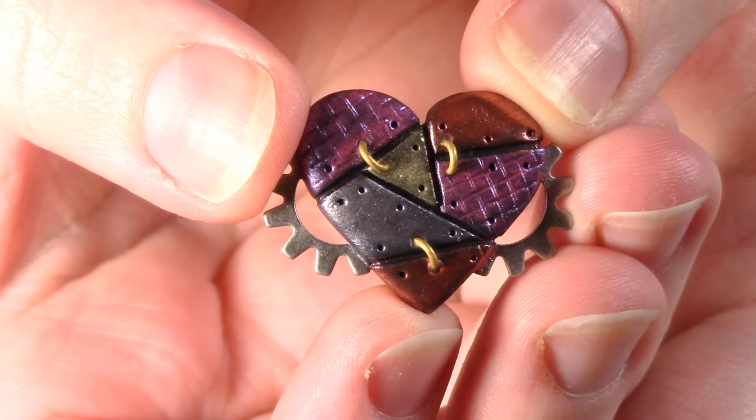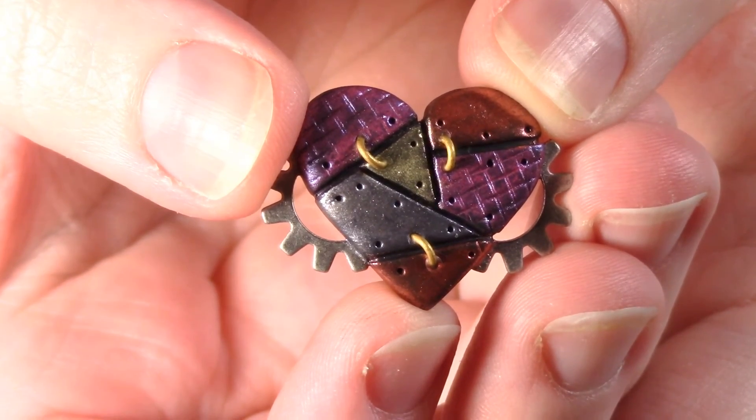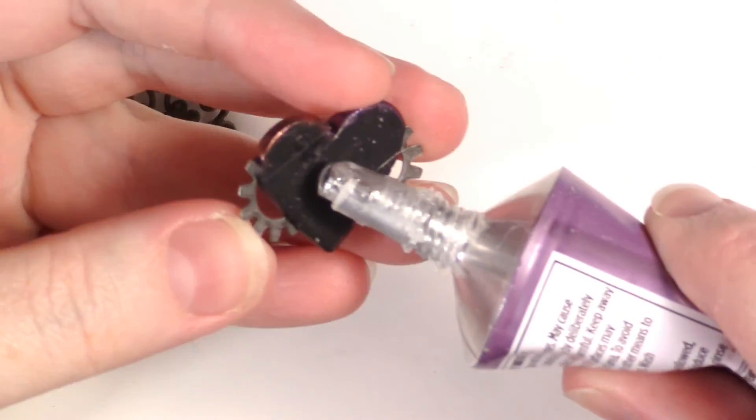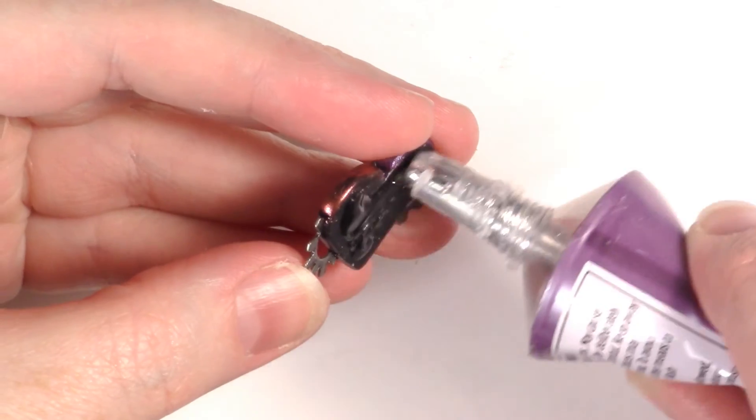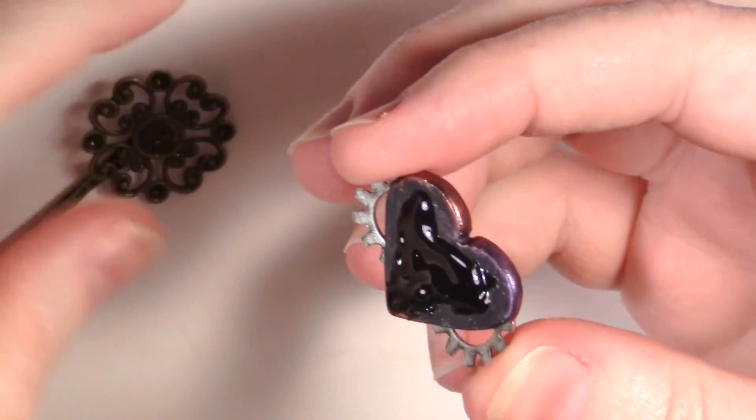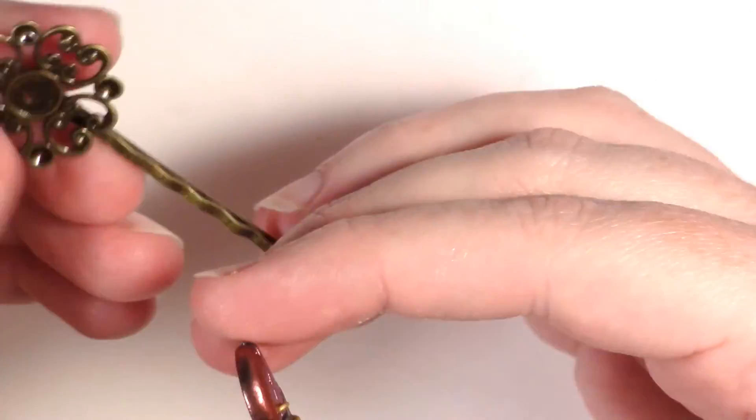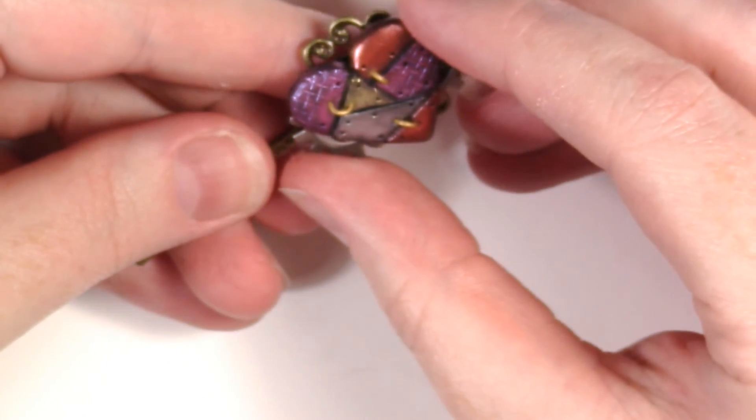Once done with your staples, bake your heart according to the package instructions. Take whatever strong glue you have and put some on the back of your heart and add it to your bobby pin. I recommend you let it dry up to 24 hours before wearing.